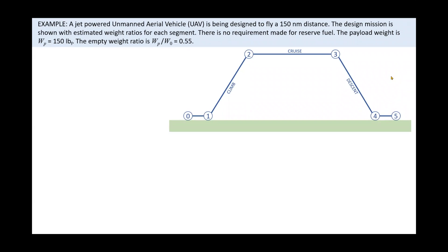The design mission is shown with estimated weight ratios for each segment. There is no requirement made for reserve fuel. The payload is 150 pounds and the empty weight ratio is 0.55.